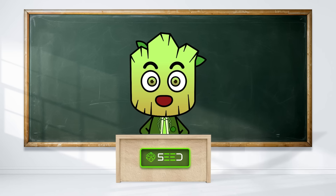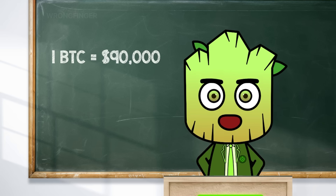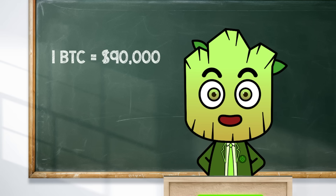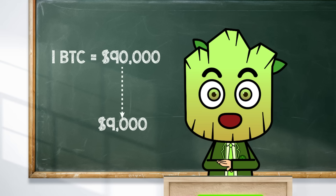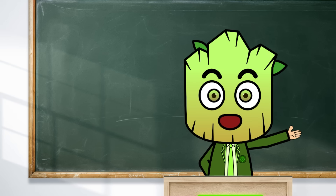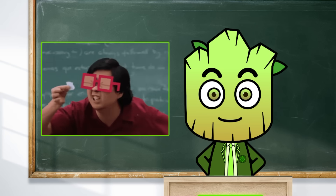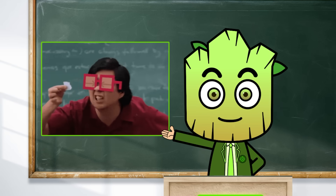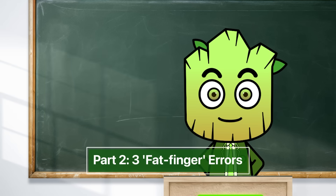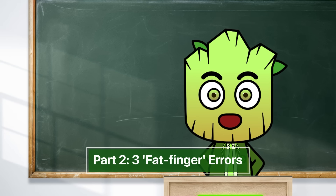For instance, imagine a trader wants to sell one BTC for $90,000 but by mistake types $9,000 instead. Their Bitcoin could instantly get bought at that super low price, losing a huge amount of money for the seller — all because of one small error. It sounds horrible: from hilarious confusion to truly costly mistakes.